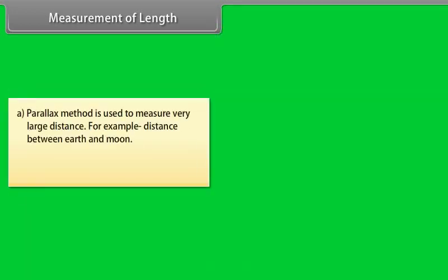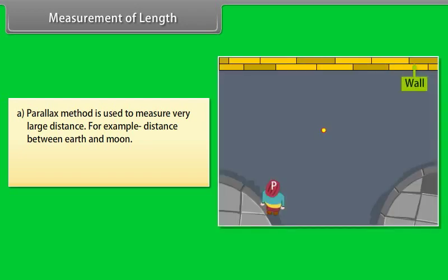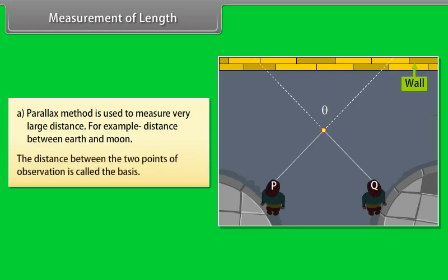Parallax method is used to measure very large distance, for example distance between earth and moon. Let us understand with an example. A girl is observing the rod against a wall from two different points P and Q.